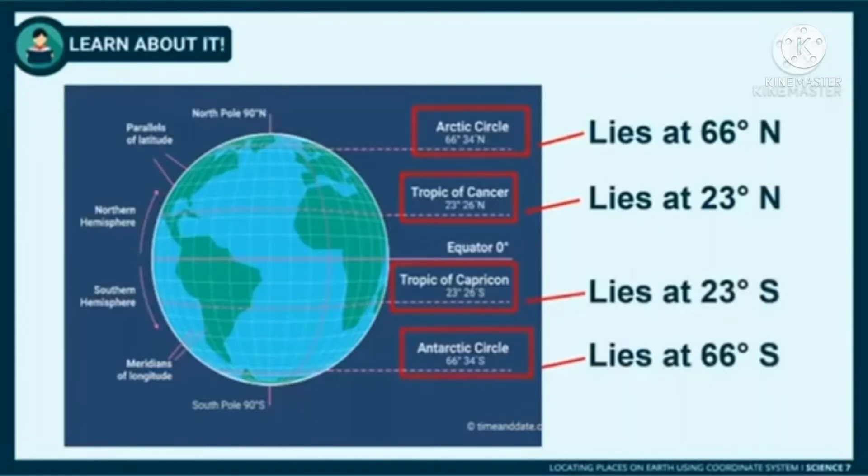The Antarctic Circle, on the other hand, is at latitude 66 degrees south. Any locations falling south of these latitudes are said to be on the Antarctic Circle. The Tropic of Capricorn is the latitude that lies 23 degrees south of the equator, and it is the southernmost position of the globe where the sun is directly overhead during the December solstice.